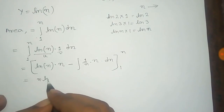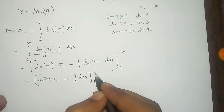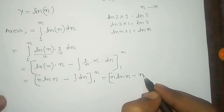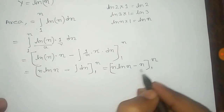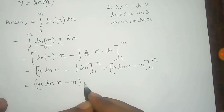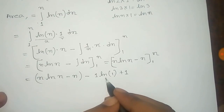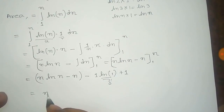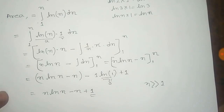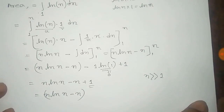That equals n logarithm of n minus — the 1/n and n cancel out — and it becomes the integral of dn with limits 1 to n, which is n. So putting in the limits: n log n minus n, and putting the lower limit 1 gives 1 times log 1 plus 1. Since log 1 equals 0, that term cancels. The remaining part is n log n minus n plus 1. Since n is very much greater than 1, we can ignore this 1, giving n log n minus n as the area under the smooth curve.